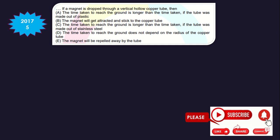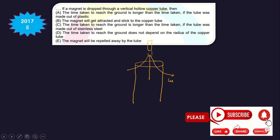Question 5: If a magnet is dropped through a vertical hollow copper tube, as the magnet falls, the linked magnetic flux changes, and by Lenz's law, an opposing induced current is produced. This is a very important concept.